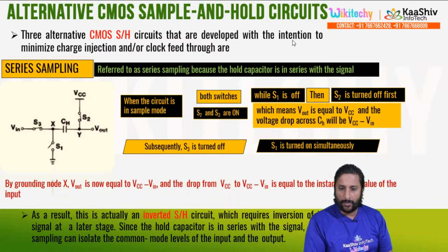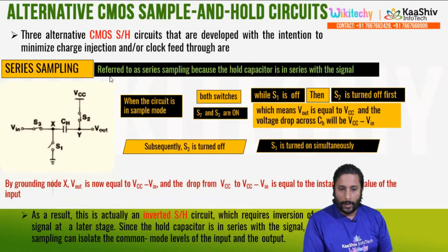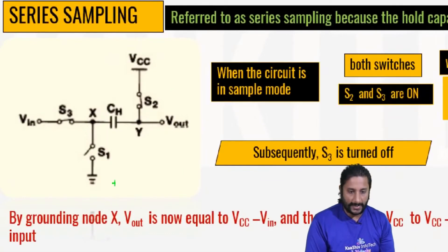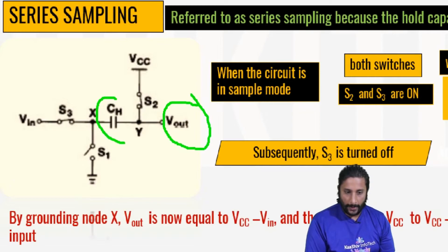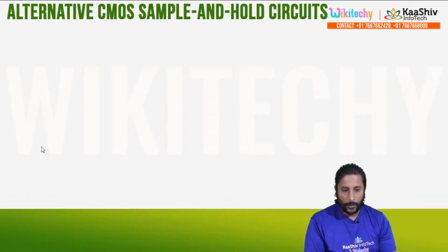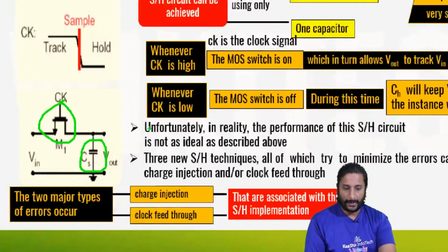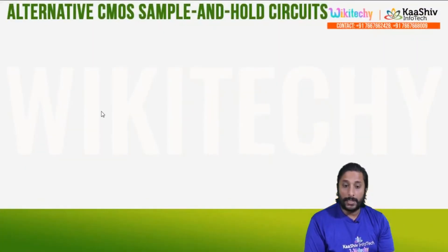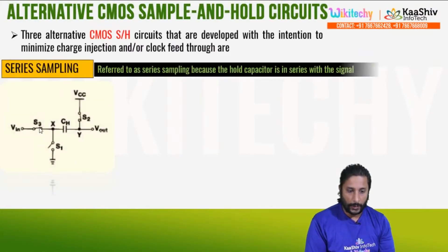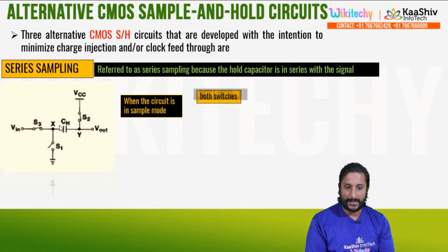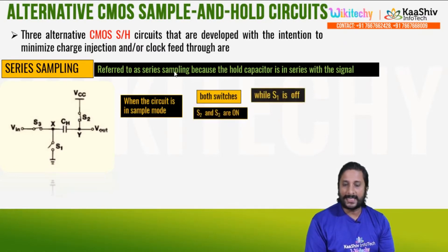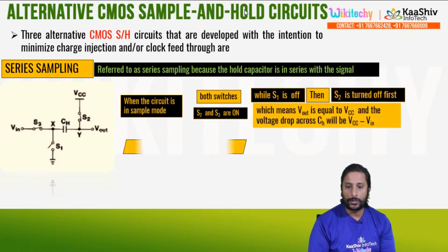Three alternative CMOS circuits are developed with the intention to minimize charge injection and clock feedthrough. Series sampling refers to having the hold capacitors in series with the signal. The hold capacitor CH is in series, with V-out and the hold capacitor in a series CMOS transmission gate configuration.